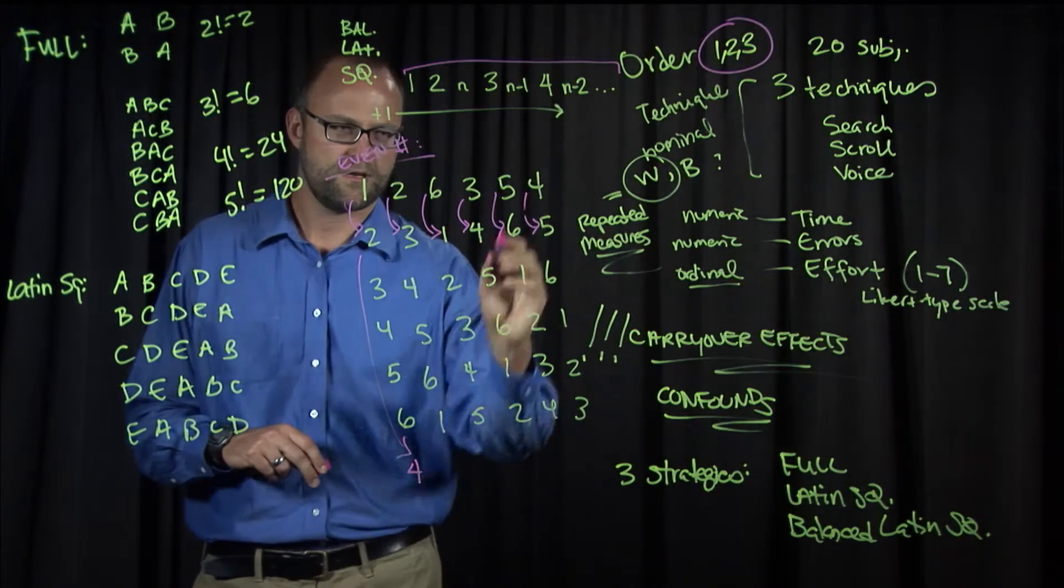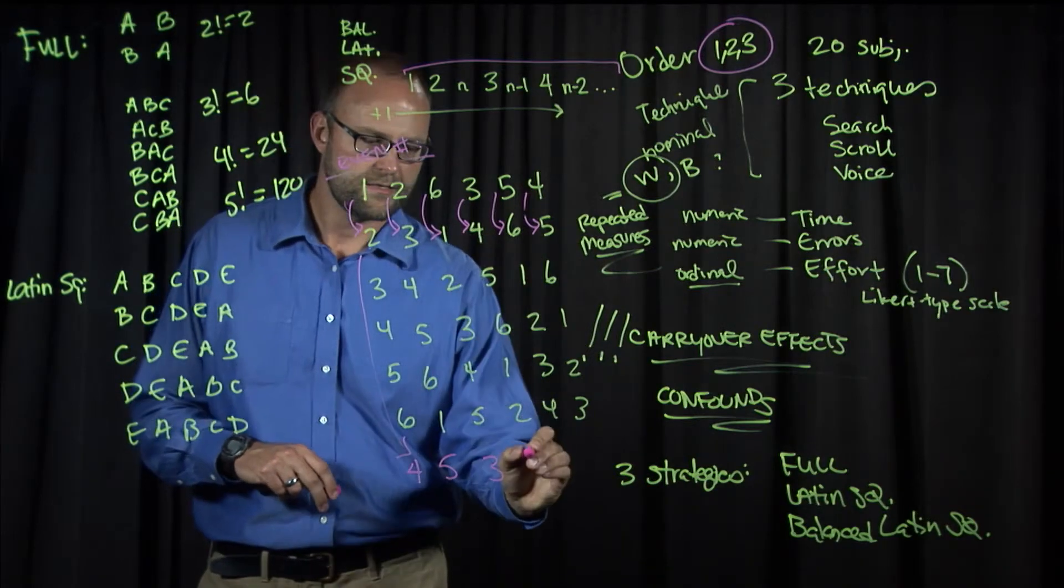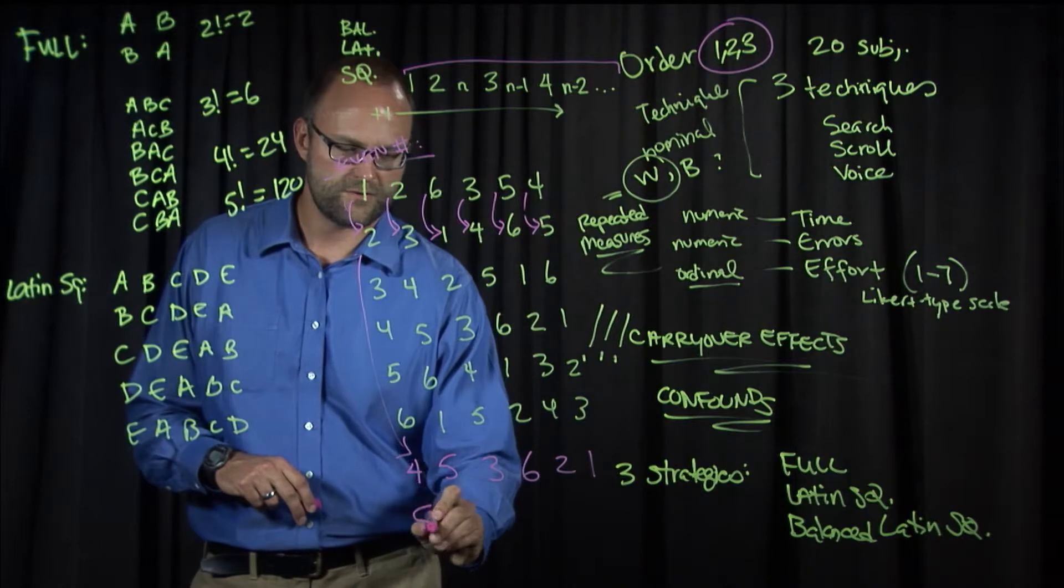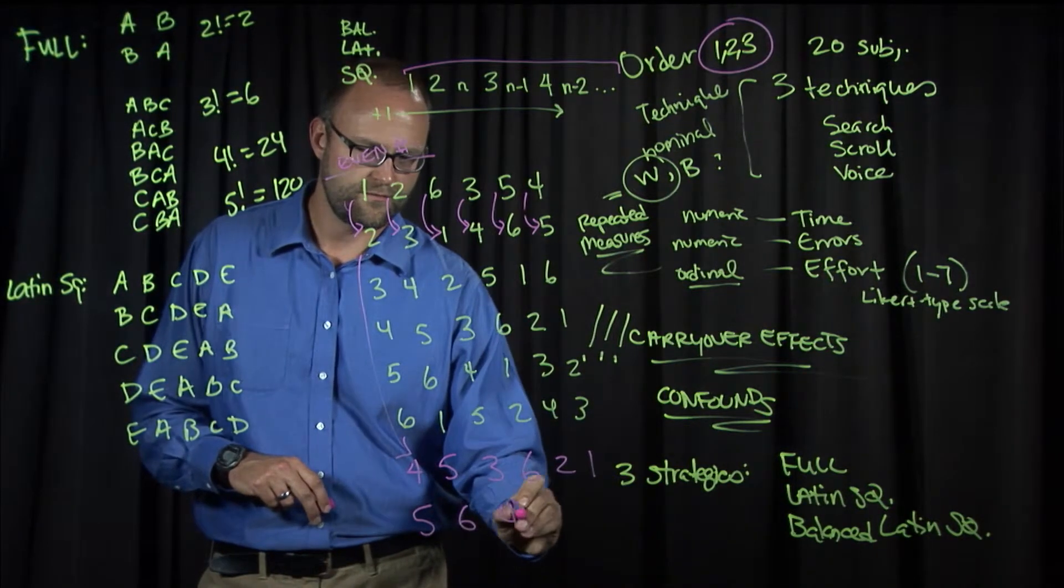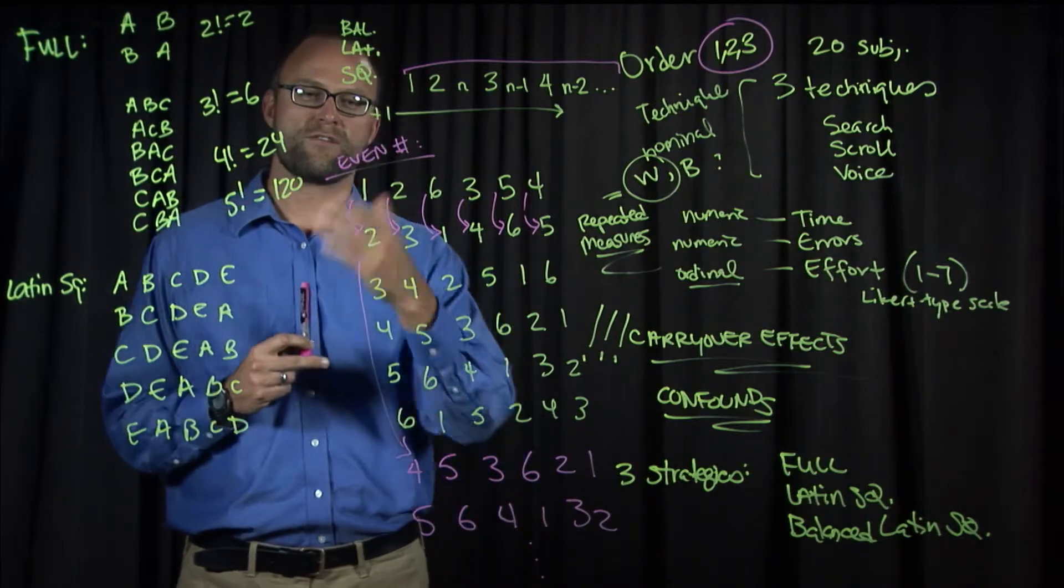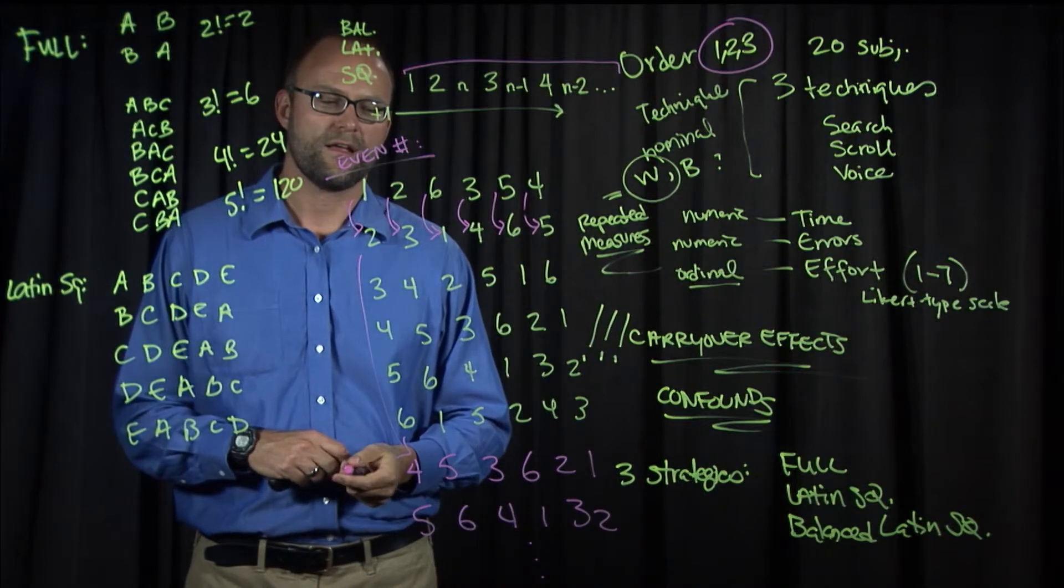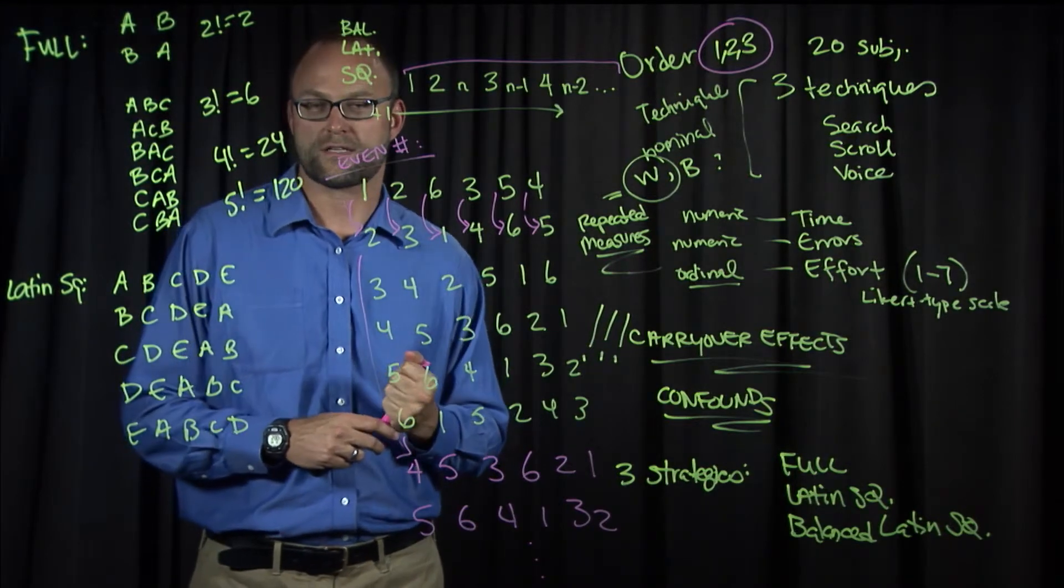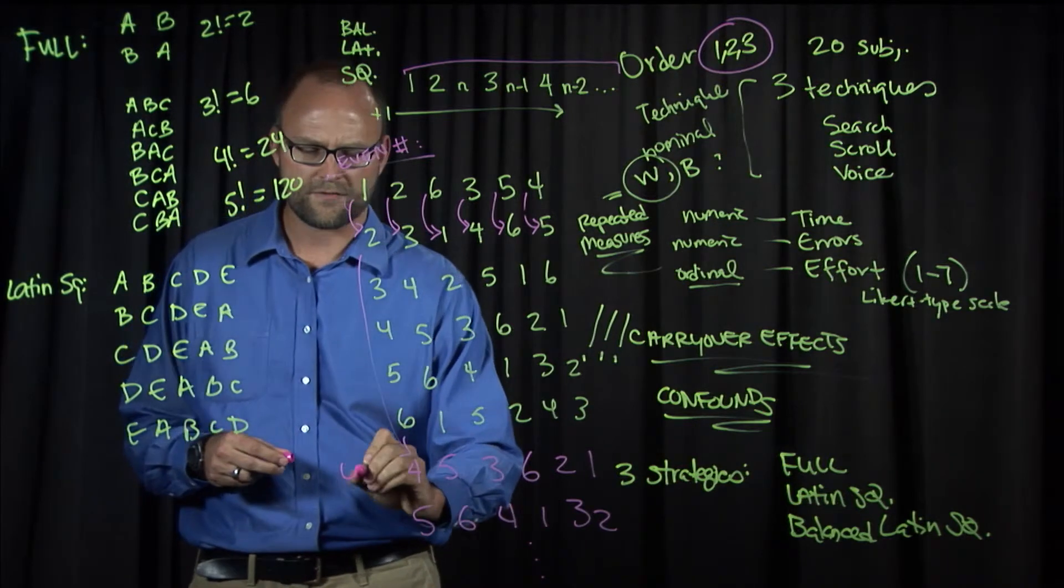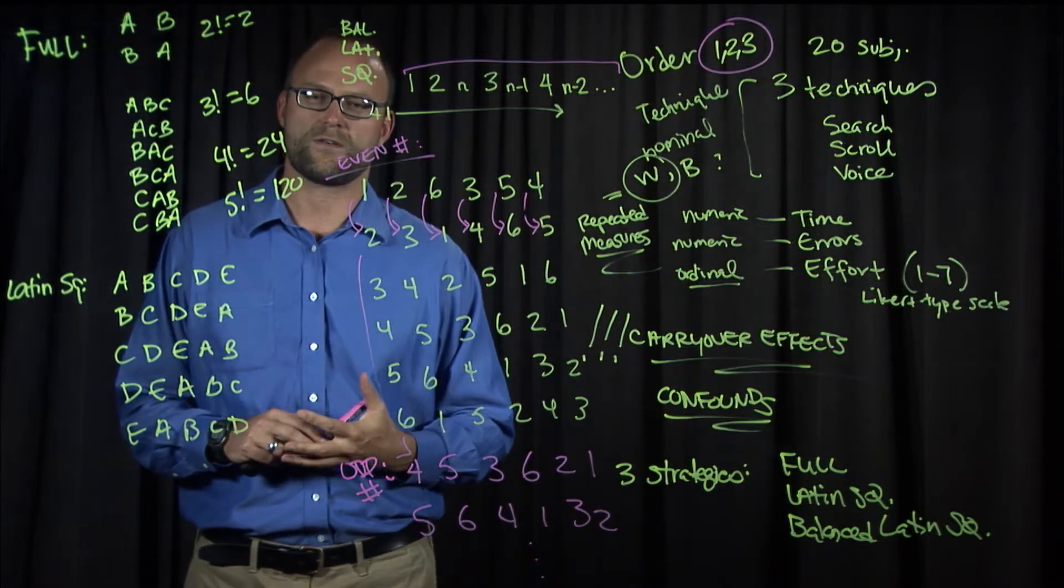This is an even number of conditions table, so we wouldn't do it here, but let me show you what that reversal looks like. It just looks like adding rows like this: four, five, three, six, two, and one, and so on, reversing each row. Five, six, four, one, three, two, and so on. We wouldn't do that for an even number of conditions because we've already satisfied that property where each condition follows every other exactly the same number of times. But for an odd number of conditions, we'd need to do that sort of mirror image to double the size of our table.